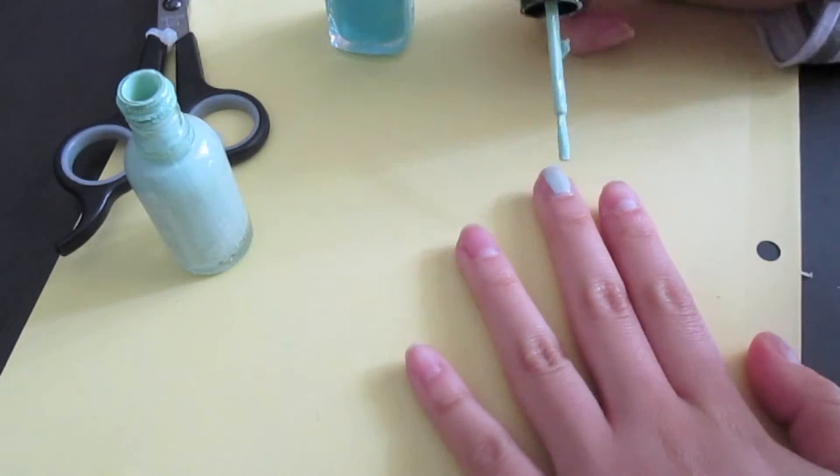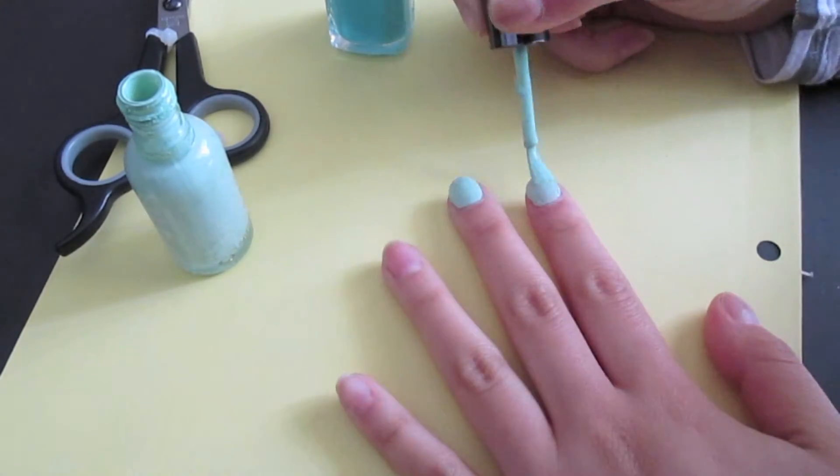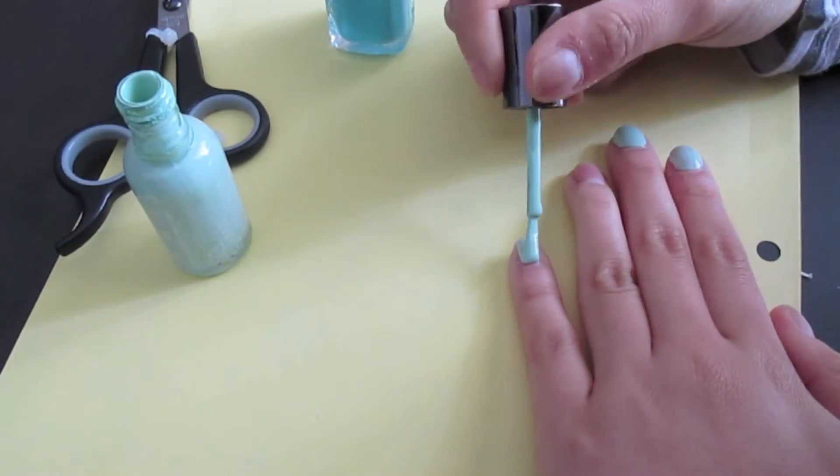Now that the strips are done, we can start painting our nails. So we're going to start with a bottom layer of the mint color on all the fingers except the ring finger.